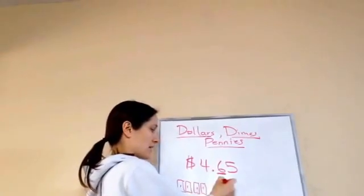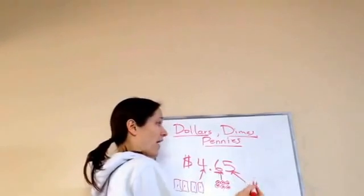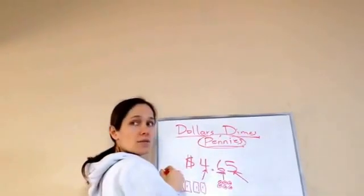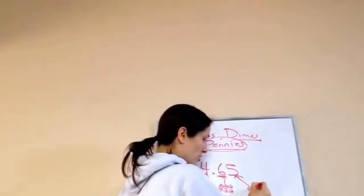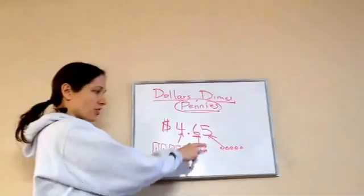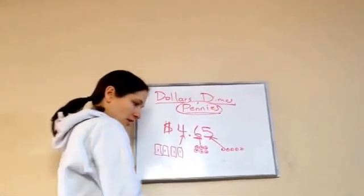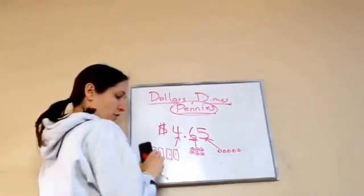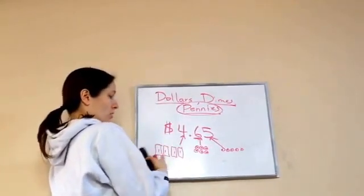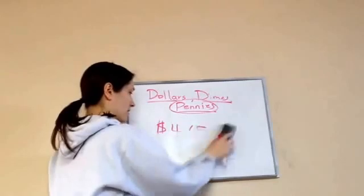So I have one, two, three, four, five, six dimes, four dollars. And then I need to do five what? Pennies. One, two, three, four, five. You see how that uses five pennies? So we can use dollars, dimes, and pennies to figure out using the fewest bills and coins possible. We would need four dollars, six dimes, and five pennies to equal that amount of money.